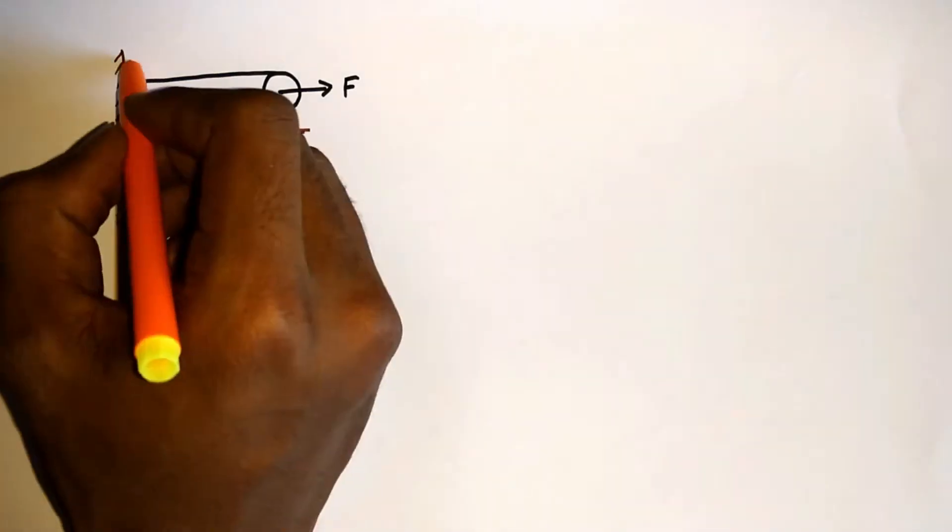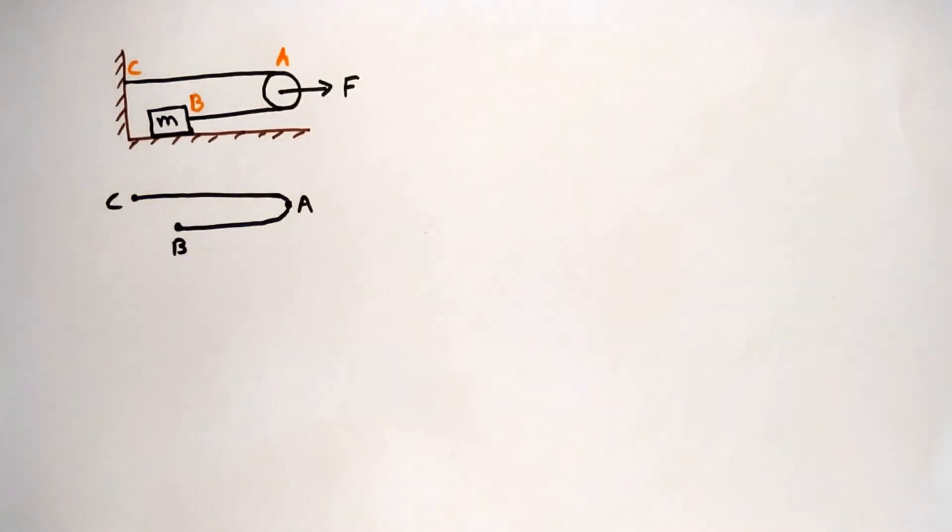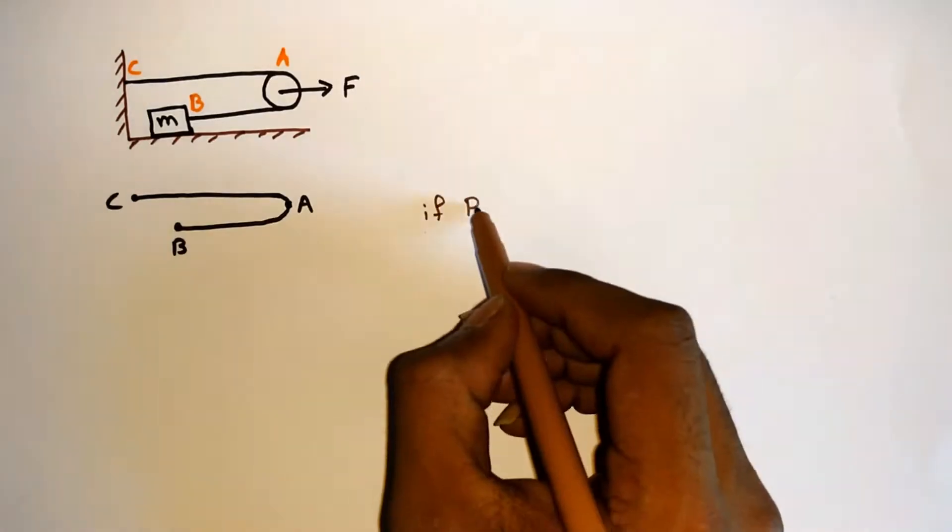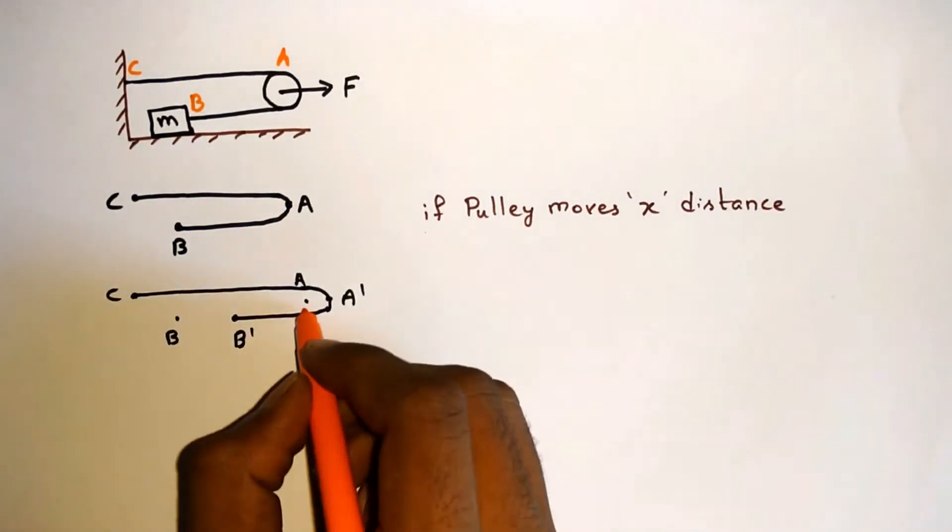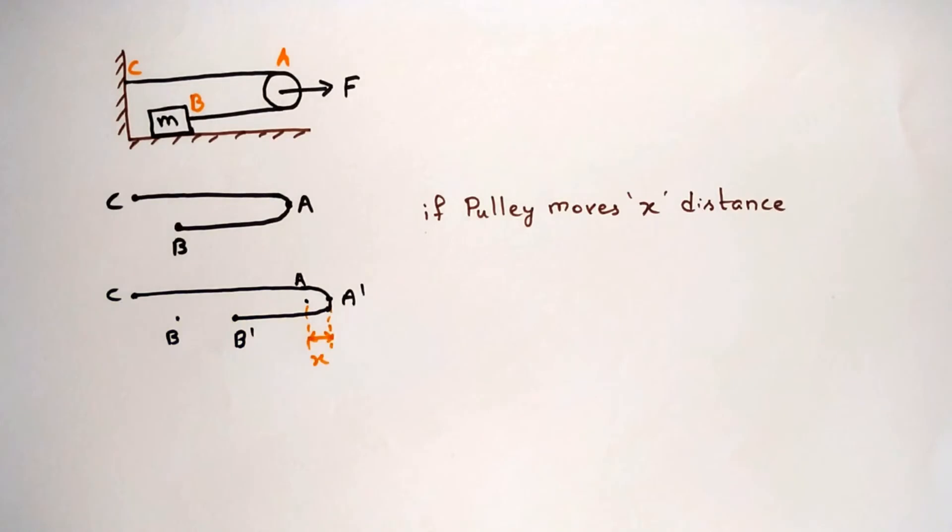In order to solve this, consider points A, B, C on the string, and at point C the string is fixed. Now if the pulley is moved by distance x, then the points A and B move to A' and B'. The pulley displacement AA' is equal to x.